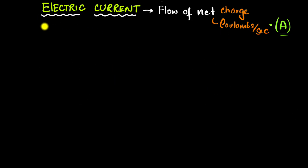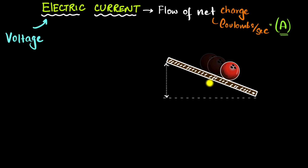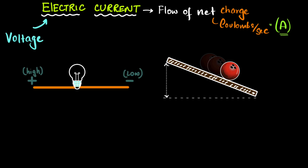How do we set up an electric current? For an electric current, we need a voltage — just like how, if you need to make a ball roll, you need a height difference, which produces a gravitational potential difference. Similarly, if you need to set up a current through a wire, you need an electric potential difference across its ends. When you have that electric potential difference, you can get a current, but you also need charges that are free to move in your material.